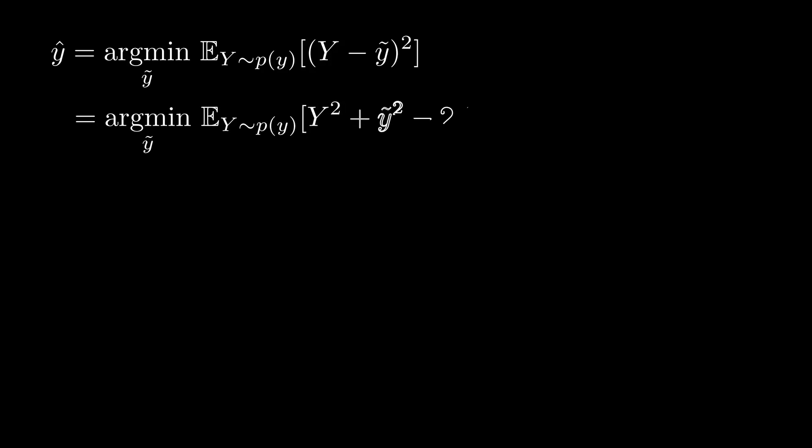Simply expand the term inside the brackets. Take y tilde squared and 2y tilde out of expectations because they are not random variables, but rather particular realizations of the random variable capital Y.